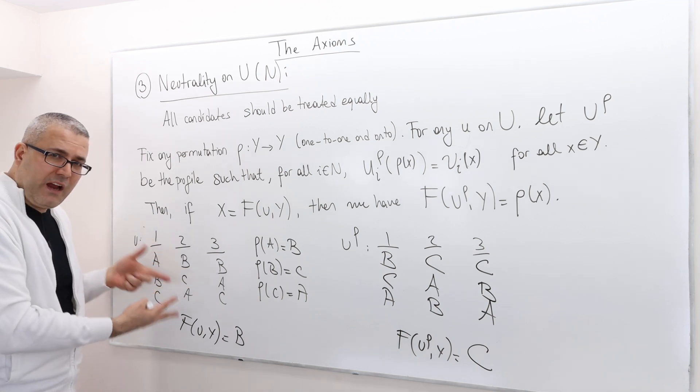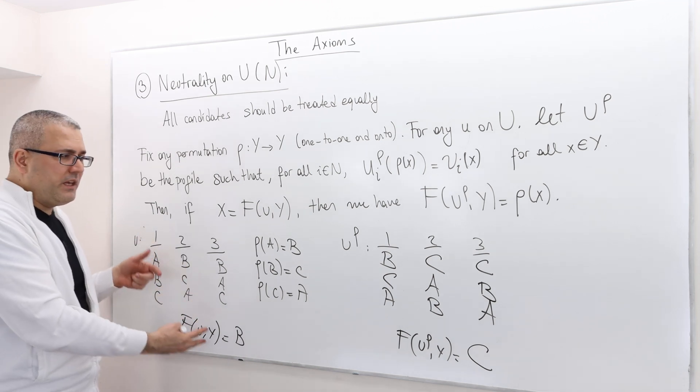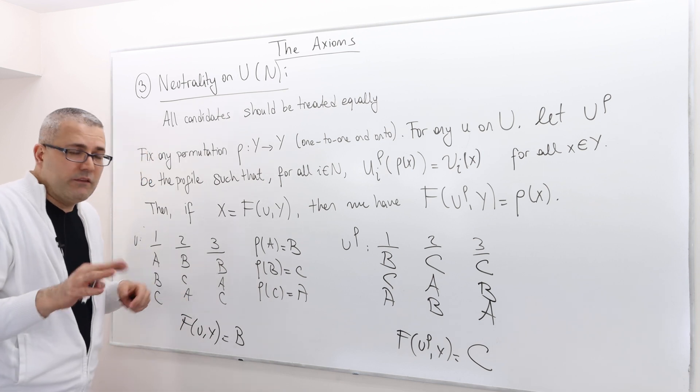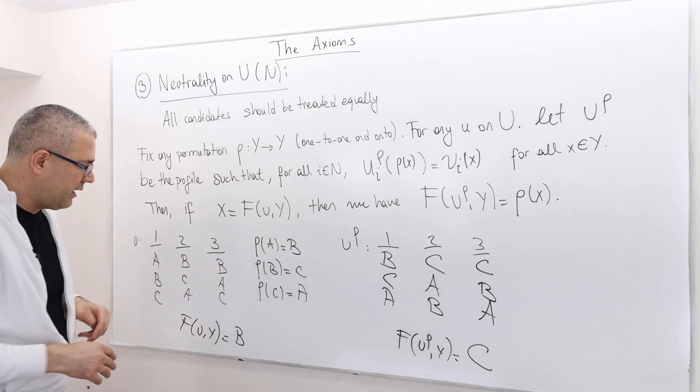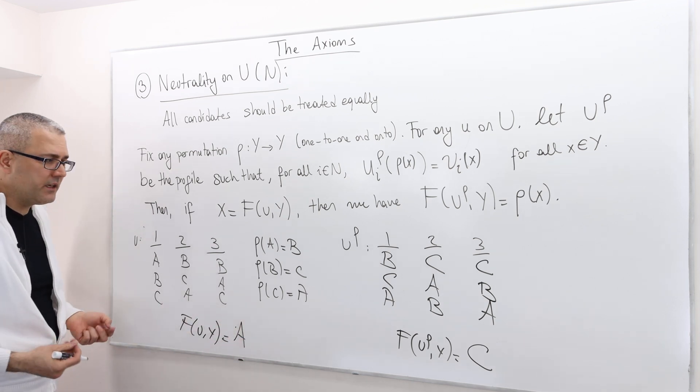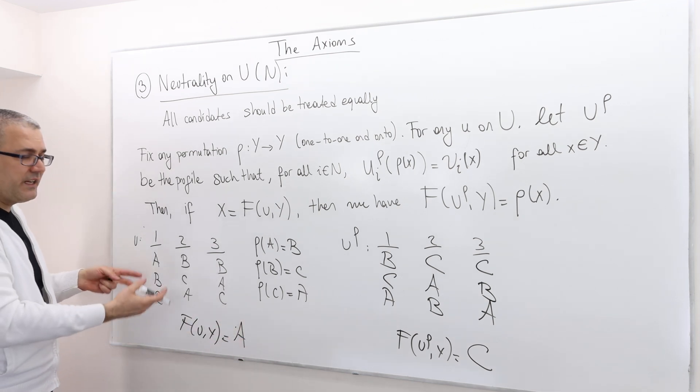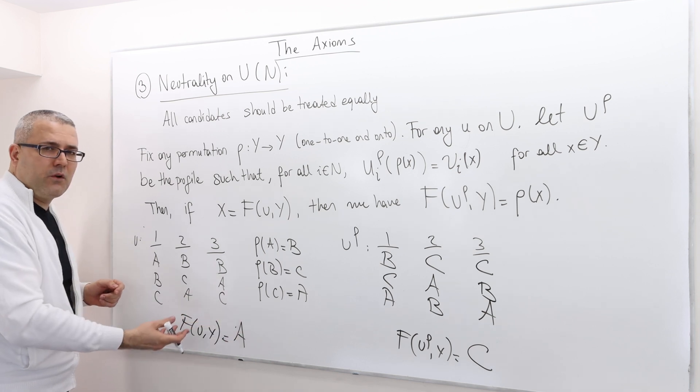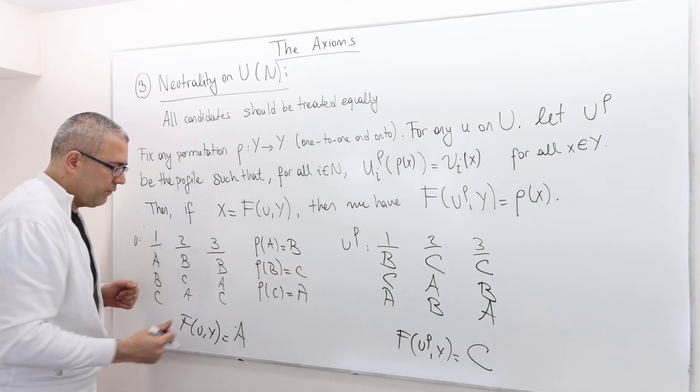Remember, if plurality is the rule, it selects B here and selects C here. If we apply another rule, whatever it is, if, for example, A is selected here, well, fine, because this is an if-then statement. If this is false, I don't care if this is true or false. But if this is true, meaning if A is selected here, well, then,